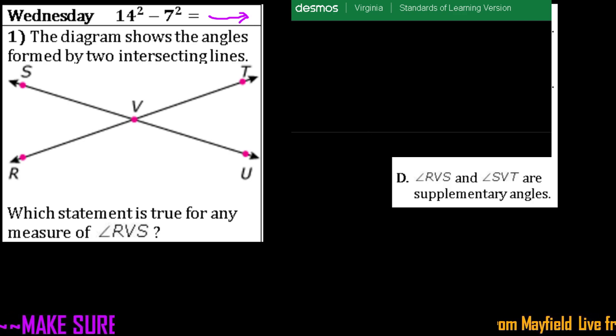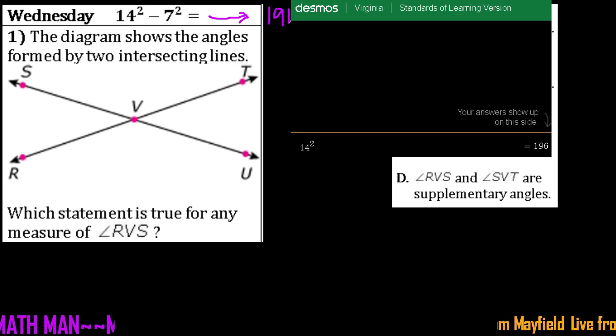Okay, so let's have 14 and then we can say squared. So that's going to be 196. And we know that 7 squared is 49. And again, you can type it in exactly how it looks. So we can say this is minus 7 squared. So that would be equal to 147.